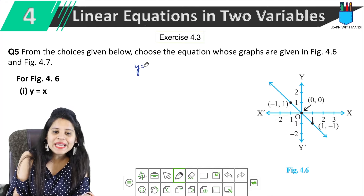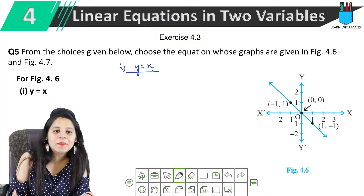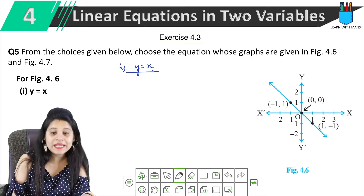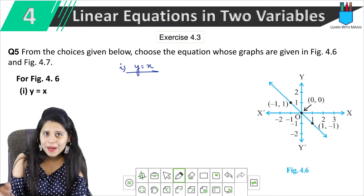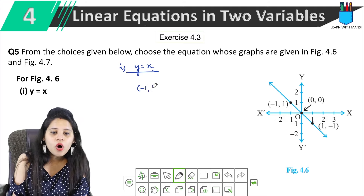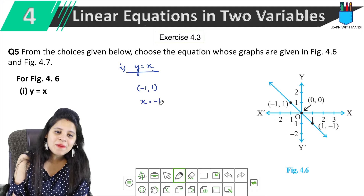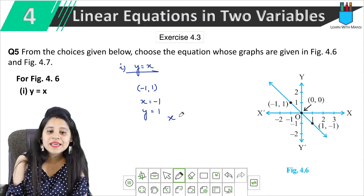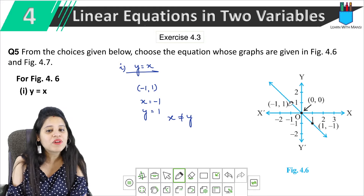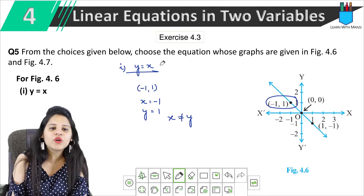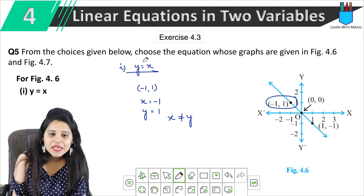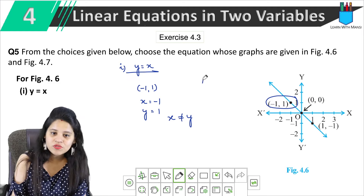The first equation is y equals to x. The most easy part — y equals to x. We check if the points are satisfied. The first point on the graph is (-1, 1). So x is minus 1 and y is 1. Clearly, x and y are not equal, so y = x is not satisfied by this point. Since even one point is not equal, this graph is not y = x. So the answer is no.